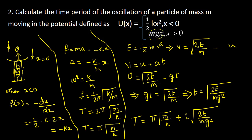The mgx potential field is gravitational potential energy — the standard expression mgh, here written as mgx. And the k·x² term is the spring potential field, where x is the displacement.